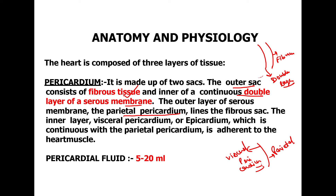In between both sides there is a space, and there is a fluid called pericardial fluid. The amount is approximately 5 to 20 mL. The visceral pericardium is also termed the epicardium. This concludes the outermost layer.